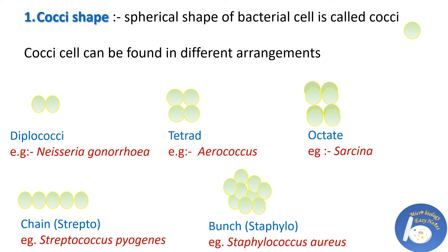The first shape is Cocci. Bacteria that are oval or spherical in shape are called Cocci bacteria. These may either remain single or attached to one another in groups. The first arrangement is Diplococci — if two bacterial cells appear in a pair, the arrangement is called Diplococci. This arrangement is present in Neisseria gonorrhoeae, which is responsible for the sexually transmitted disease gonorrhea.